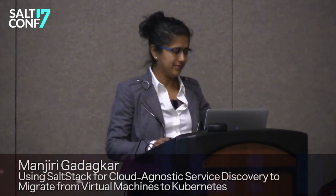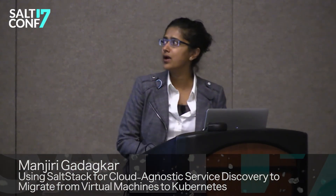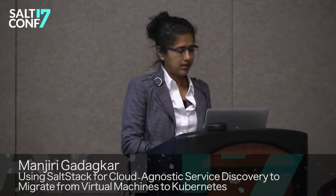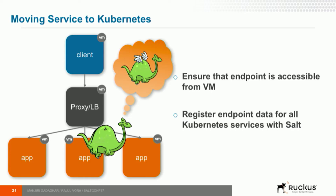Thanks, Rajul. My name is Manjiri and I will be walking you through the remaining two topics. Let's dive into moving a service into Kubernetes and examine its relationship with its clients. We have to answer two questions: how to make that service accessible from the VM — the network connectivity problem — and how does Salt learn about that service? In other words, if Salt was doing one thing to discover the service when it was running in a virtual machine, what does it need to do differently now that it has moved?